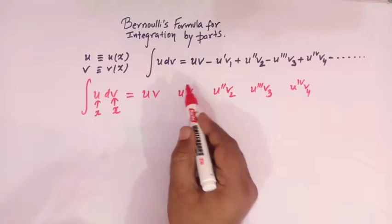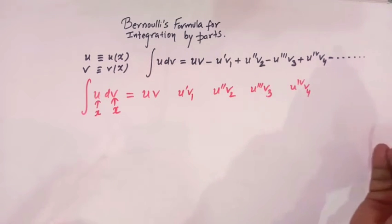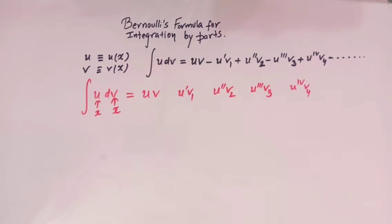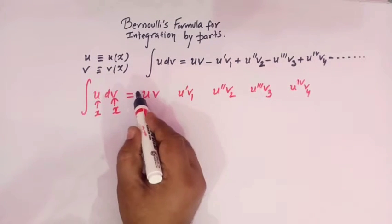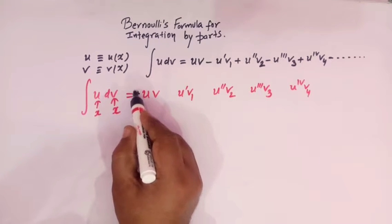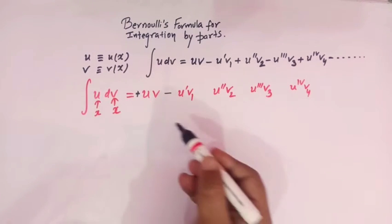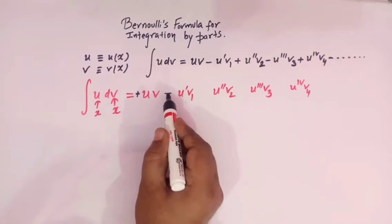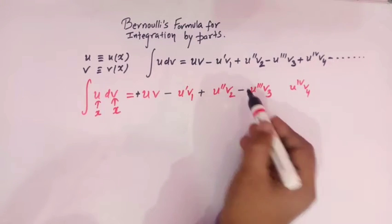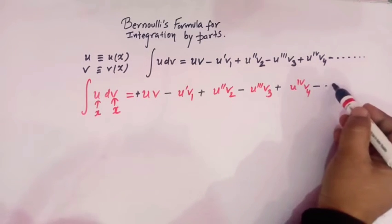And here we have the first derivative of u, then second, then third, then fourth, then fifth, then sixth, and so on. Now let us see what about the sign. First we will have the positive sign, then we will have the negative sign, and in an alternate manner we will write the signs. So here we have plus, then minus, again plus, then minus, and again plus, then minus, and so on.